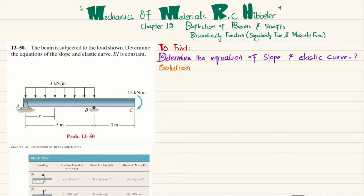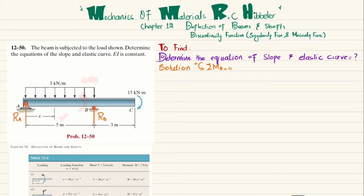First step is to draw the free body diagram. We remove the support at point A to get reaction force Ra, and remove the roller support at point B to get reaction force Rb. We will find Rb using the equilibrium equation: sum of all moments about point A equals zero, taking counterclockwise moments as positive. The moment due to Rb is Rb × 5 (counterclockwise, so positive).